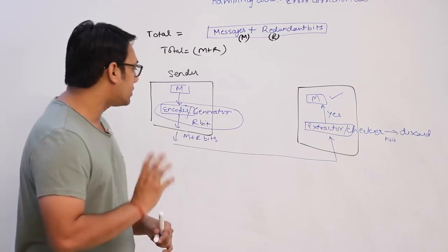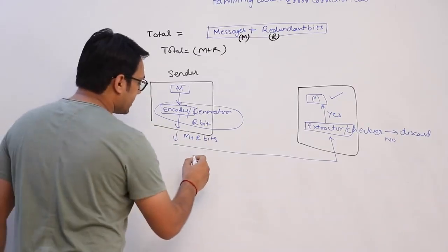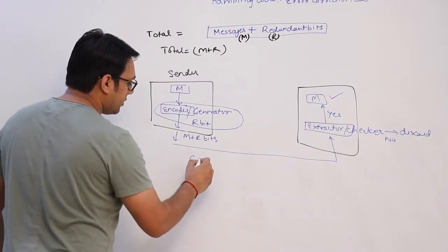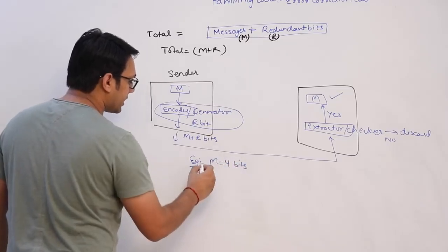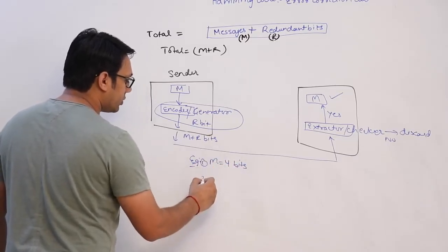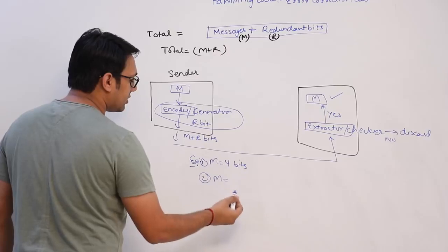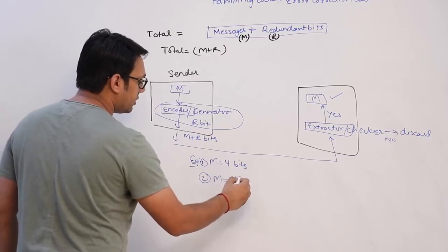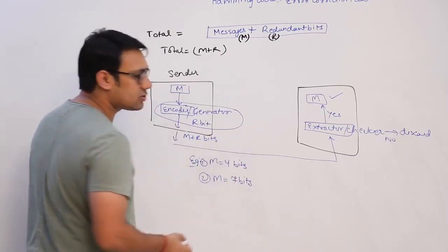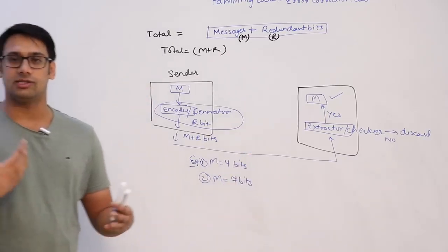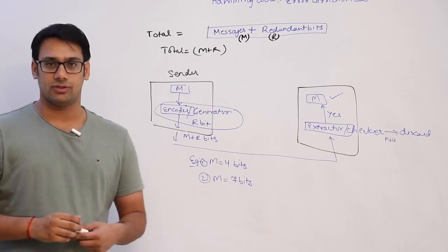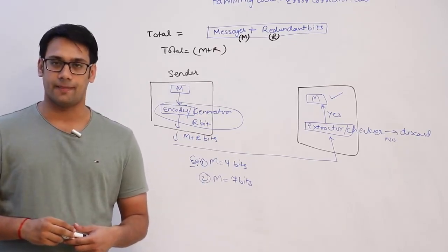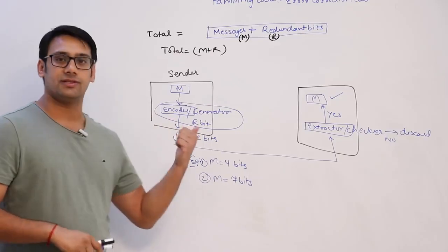We are going to give examples when the message length is 4 bits and when the message length is 7 bits. If you understand these two examples, you will easily be able to understand Hamming codes for any message length.